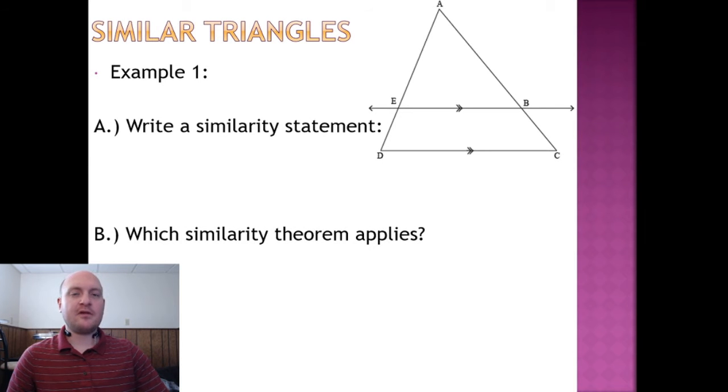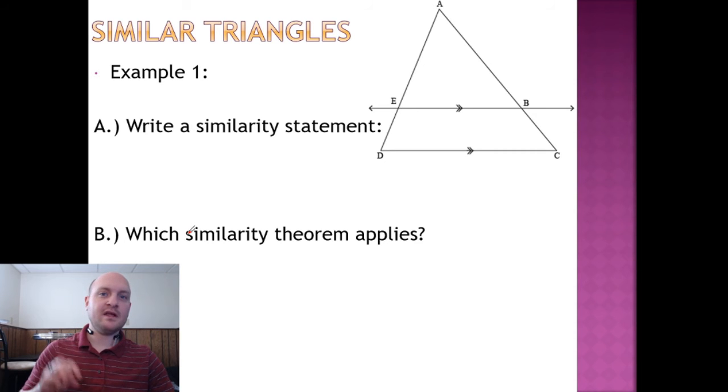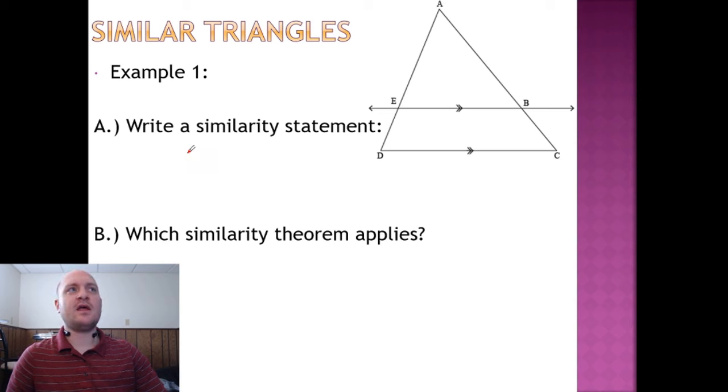All right. So an example of how this would play out. In a problem here, we have, I assume, similar triangles somehow, because it's asking us for a similarity statement. Well, let's see if you can identify what the two triangles would be that are similar. They are AEB and ADC. So triangle AEB and triangle ADC are similar.